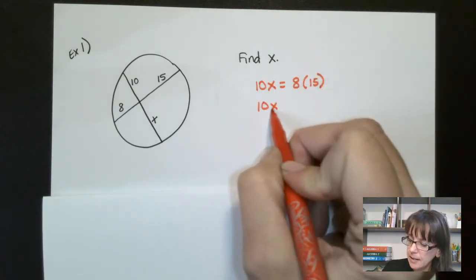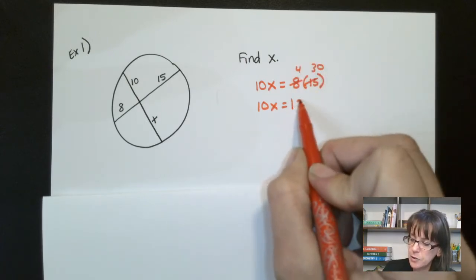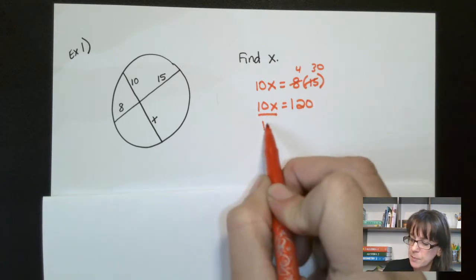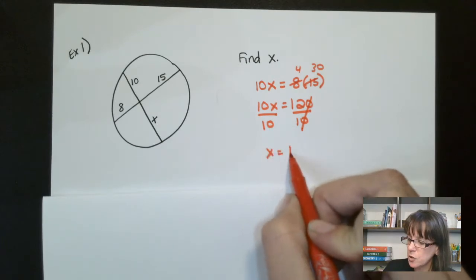So in this case, what we have is 10 times X equals 8 times 15. So 10X equals, what is that? 4 times 30. So it'd be 120 there. Divide both sides by 10. Lob off our zeros there. We get X equals 12.